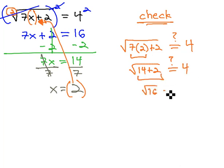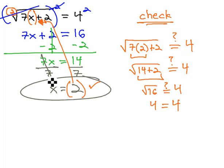14 plus 2 is 16 under the square root. Hopefully, that's 4. And sure enough, the square root of 16 is 4. It does check. That answer does work. X equals 2 is the solution to this equation.